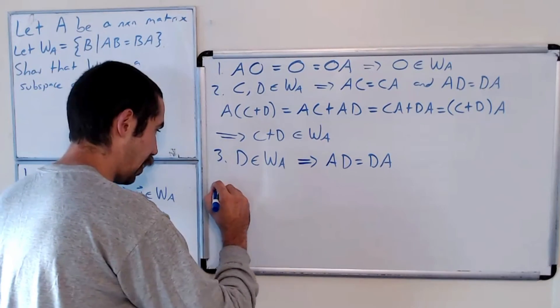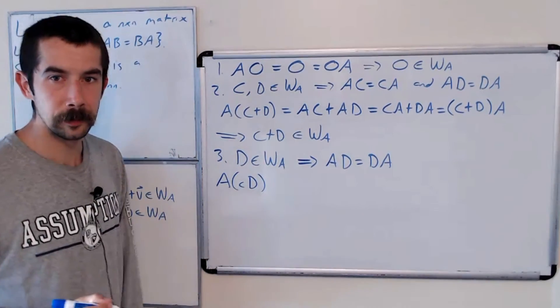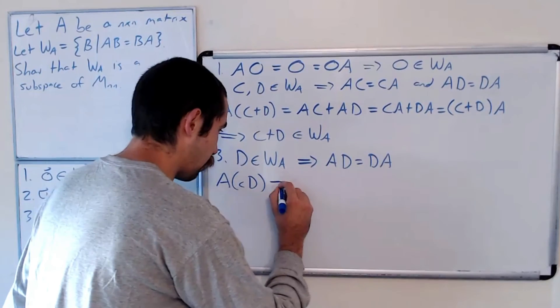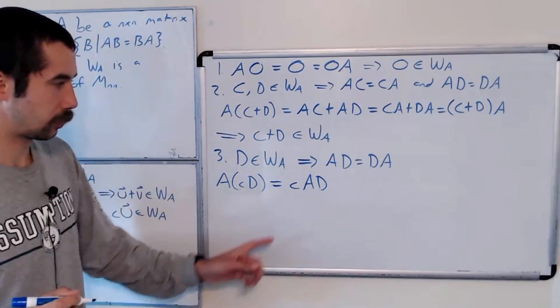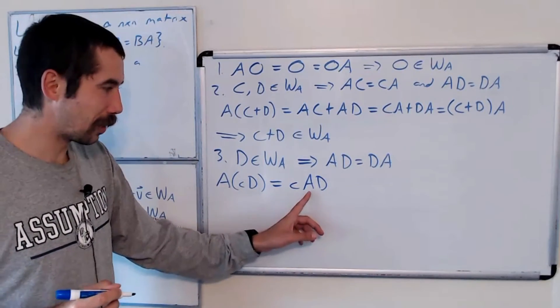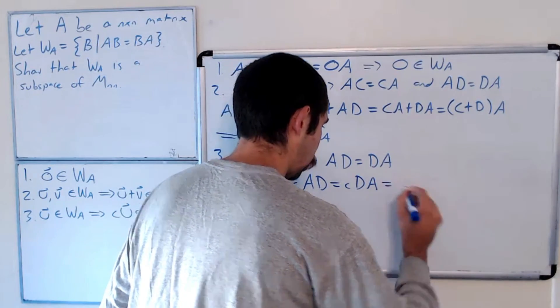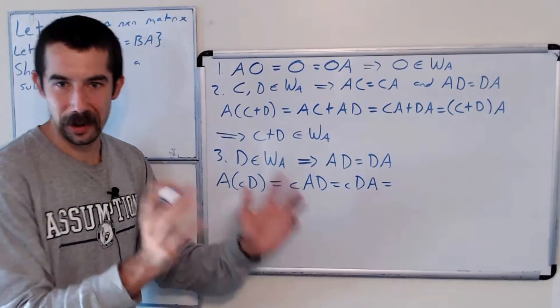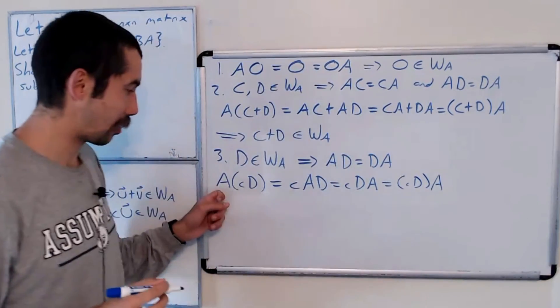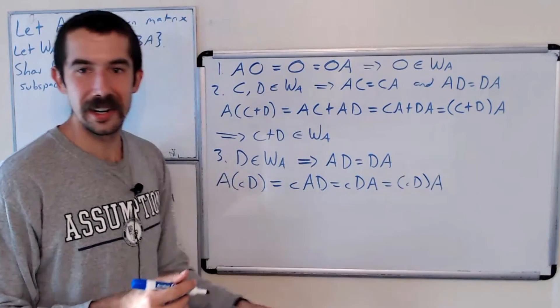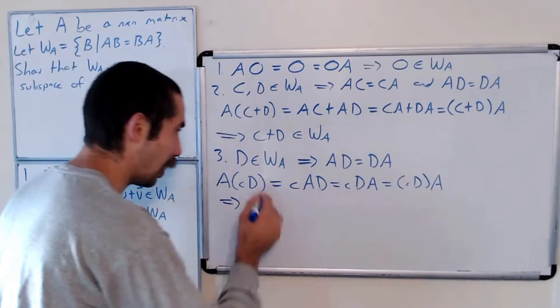So let's look at A times some scalar times D. But we know with the properties of matrix multiplication that this is equal to the scalar times AD. And we know that AD is equal to DA. So this is the scalar times DA, which we can put in parentheses. So CD times A. So A times CD is equal to CD times A. So CD is in W sub A.